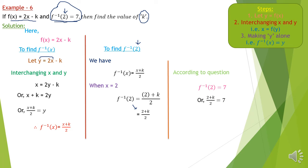Now we equate our f⁻¹(2) to 7, according to the given condition: (2+k)/2 = 7. On cross multiplication: 2+k = 14. Changing sides: k = 14−2 = 12. If we break down the problem and do it part by part, the solution is very easy. You can pause the video, copy this, understand it, or replay this part of the video.